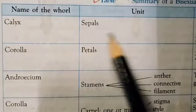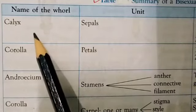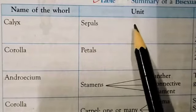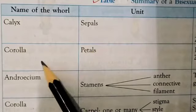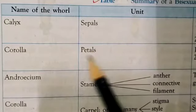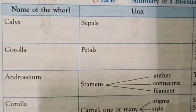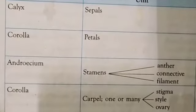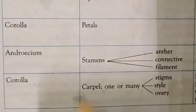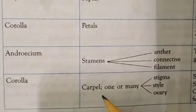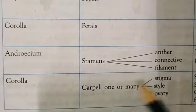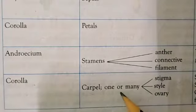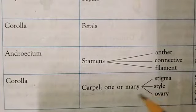Each whorl has its own unit. Calyx has sepals, corolla has petals, androecium has stamens, and gynoecium has the carpel — which may be one or many — consisting of stigma, style, and ovary.